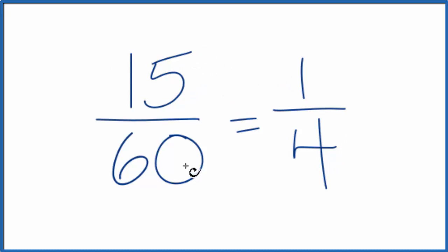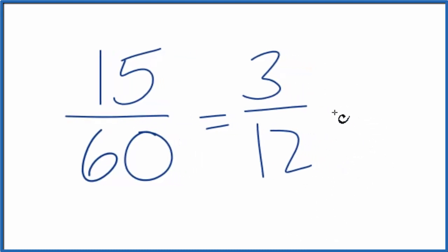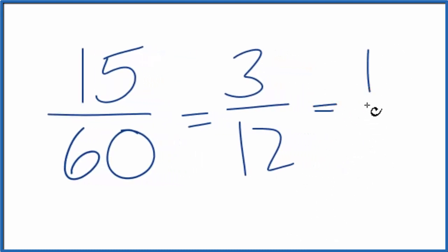Another way you could do it is divide 15 and 60 by 5. 15 divided by 5 is 3, and 60 divided by 5 is 12. This fraction might be easier to work with. We divide 3 by 3 to get 1, and 12 by 3 to get 4. We get the same answer; this just had another step.